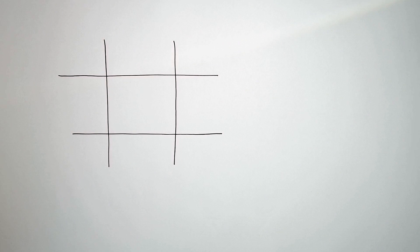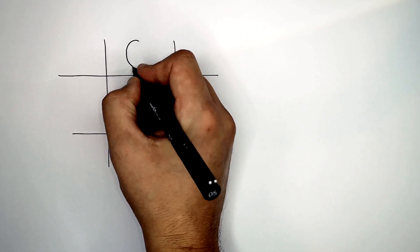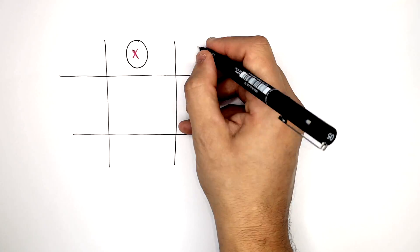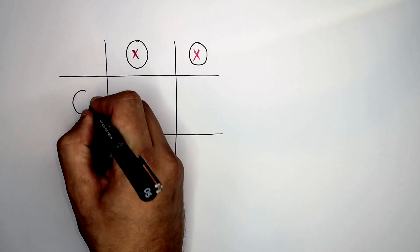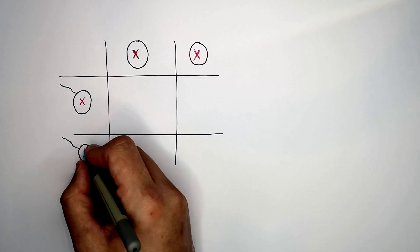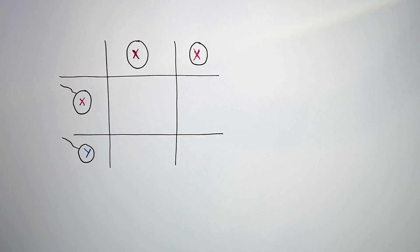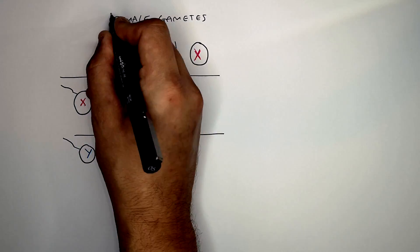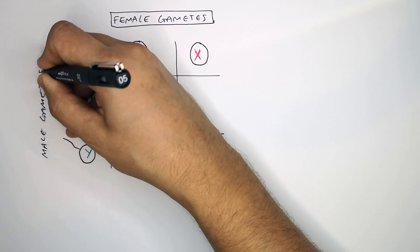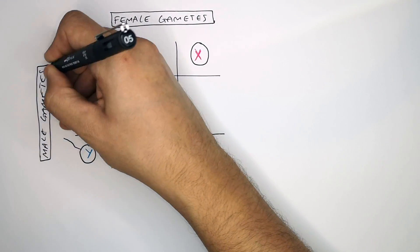We're now going to use a Punnett square to show how sex can be inherited. You firstly put the potential gametes in the Punnett square. So the female gametes are X or X, and the male gametes are X or Y.